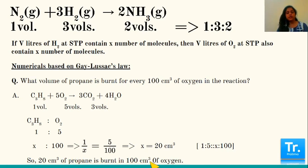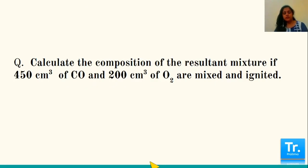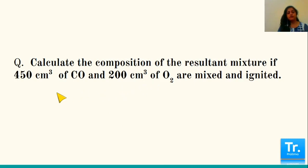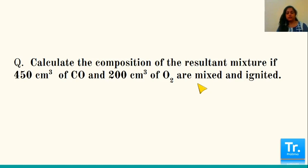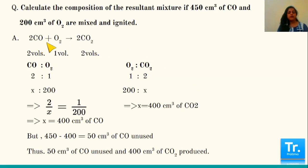Next question: calculate the composition of the resultant mixture if 450 cm³ of carbon monoxide and 200 cm³ of oxygen are mixed and ignited. Carbon monoxide and oxygen give carbon dioxide. Balance the equation and write the ratio. The balanced ratio is 2:1:2. According to the question, 450 cm³ of CO and 200 cm³ of oxygen are given. The CO to oxygen ratio is 2:1.